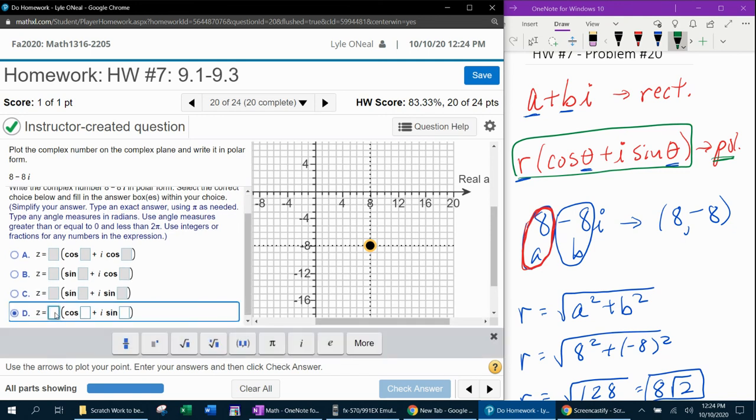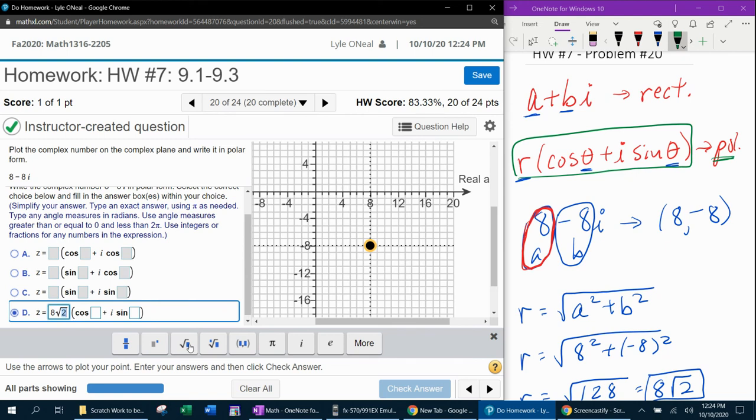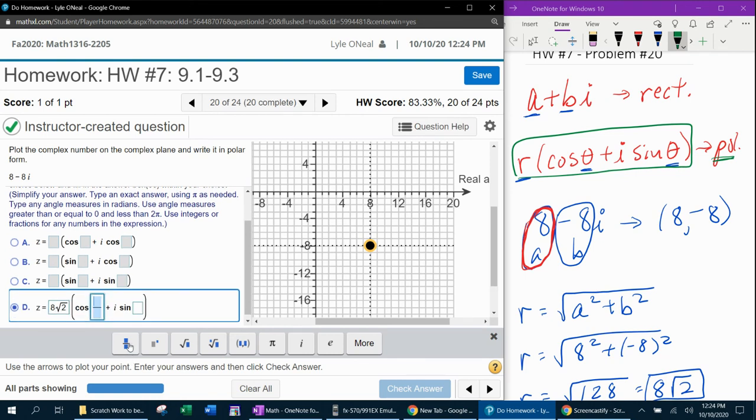And we need to put in the r and theta. So our radius was 8 square root of 2. Notice it does not want a decimal approximation. It says type an exact answer, so that's going to have to be the exact answer.